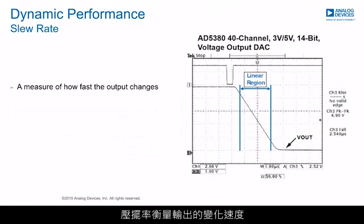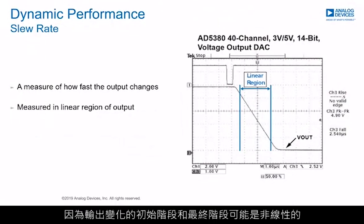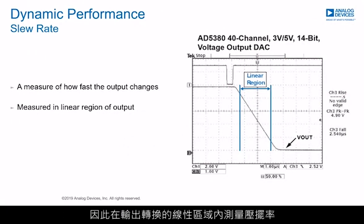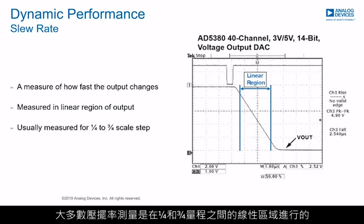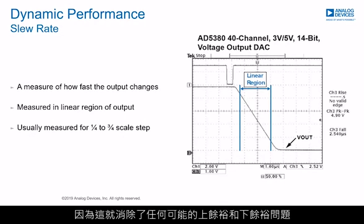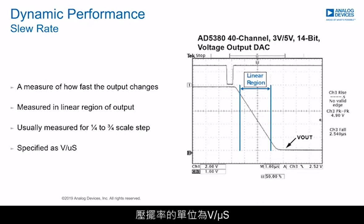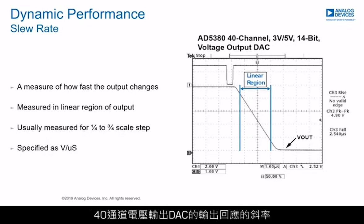Slew rate is a measure of how fast the output changes. Because the initial and final stages of the output changing can be non-linear, the slew rate is measured during the linear region of the output transition — most measurements are taken between one-quarter and three-quarter scale, removing any headroom and footroom issues. Slew rate is specified in volts per microsecond. The plot shows the AD5380 40-channel voltage output DAC with a slew rate of 2.5 volts per microsecond.